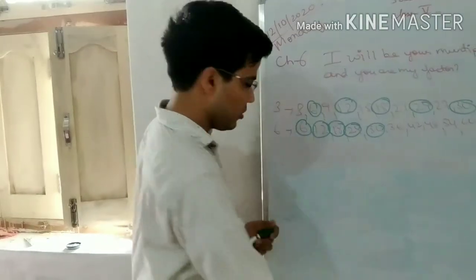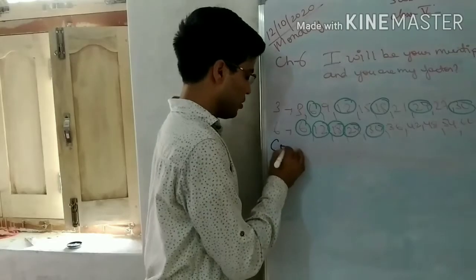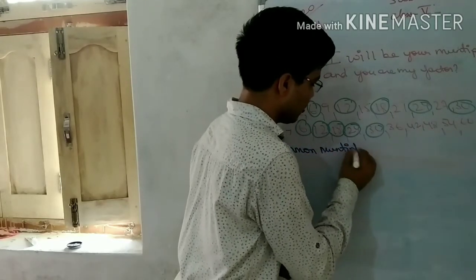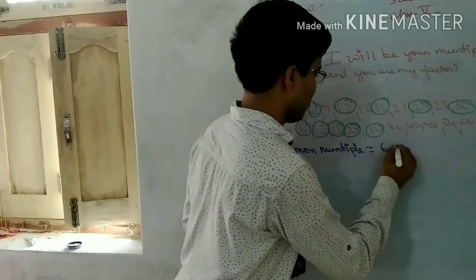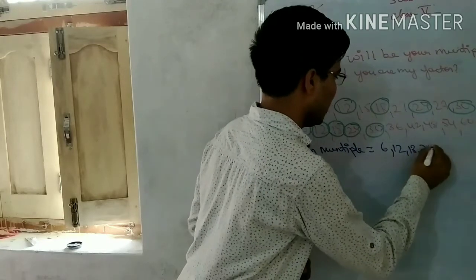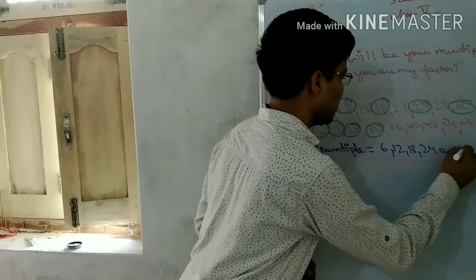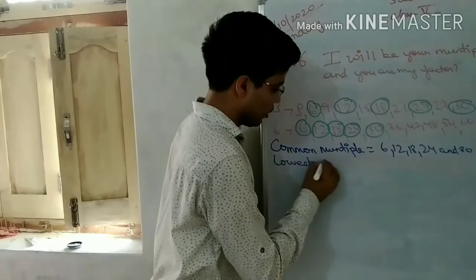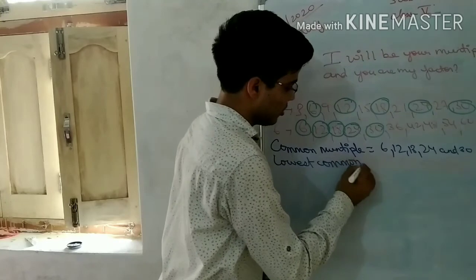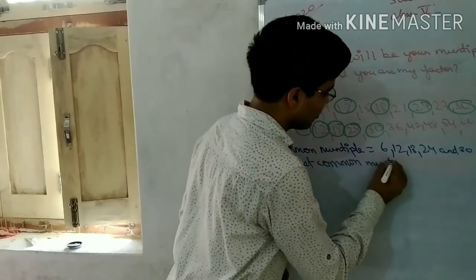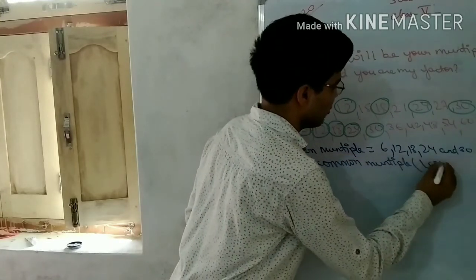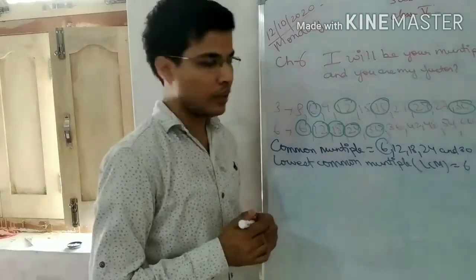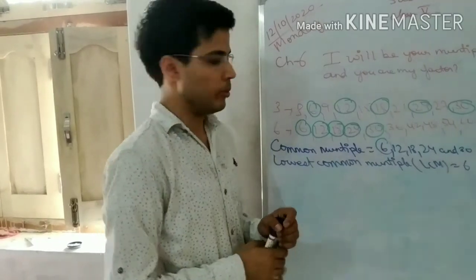So you can write the common multiples as: 6, 12, 18, 24, and 30. Now we will find the smallest one, or the lowest one. The lowest common multiple, or LCM, is equal to 6, because 6 is the smallest one. This is how we find the LCM of any two numbers.